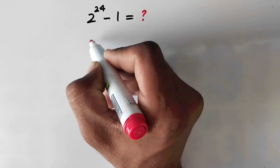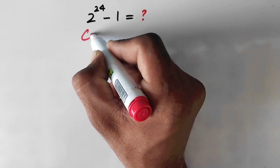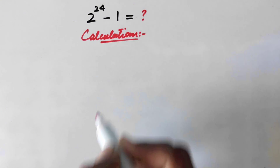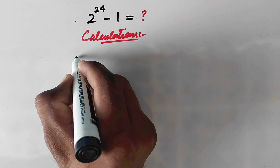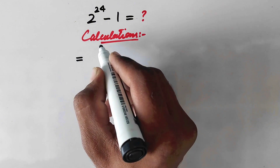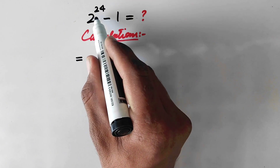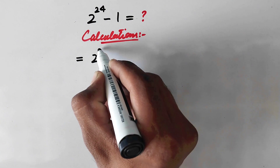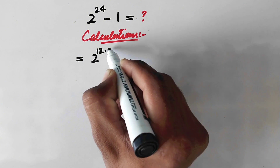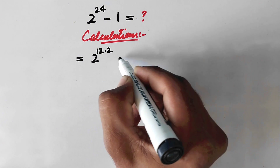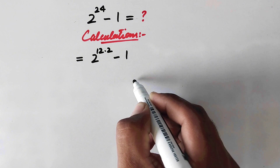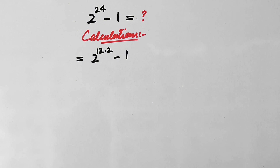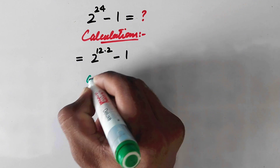Let us see the calculations. In the first step, we will rewrite the expression. Since 2 has a very large power, we will split this power as 2 to the power 12 times 2, minus 1.